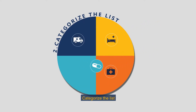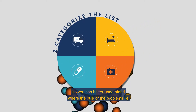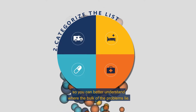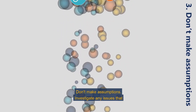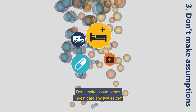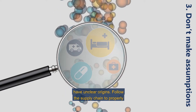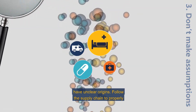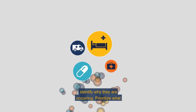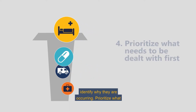Categorize the list so you can better understand where the bulk of the problems lie. Don't make assumptions — investigate any issues that have unclear origins and follow the supply chain to properly identify why they are occurring.